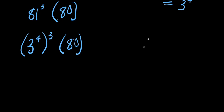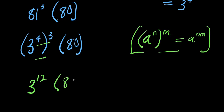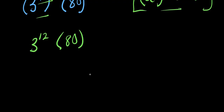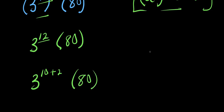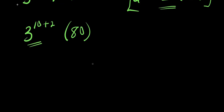Right now, I can express this 12 as the summation of 10 and 2. Using the identity a power n raised to the power of m equals a power n times m, I apply this here. So I'm going to have 3 power 4 times 3, that is 3 to the power of 12, times 80. Expressing 12 as 10 plus 2, I have 3 power 10 plus 2 times 80. Applying the identity a power n plus m equals a power n times a power m, I get 3 power 10 times 3 power 2, times 80.